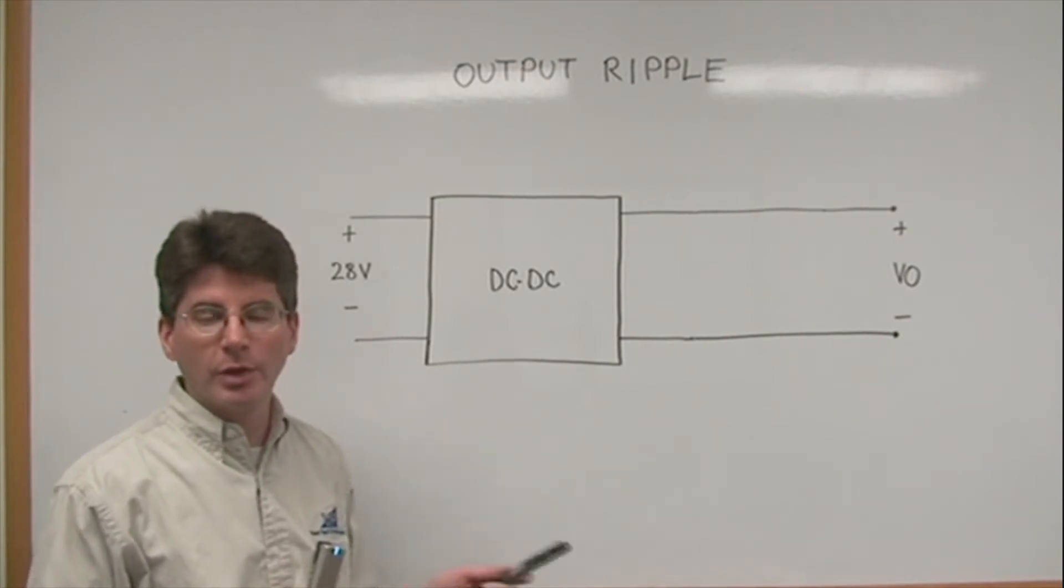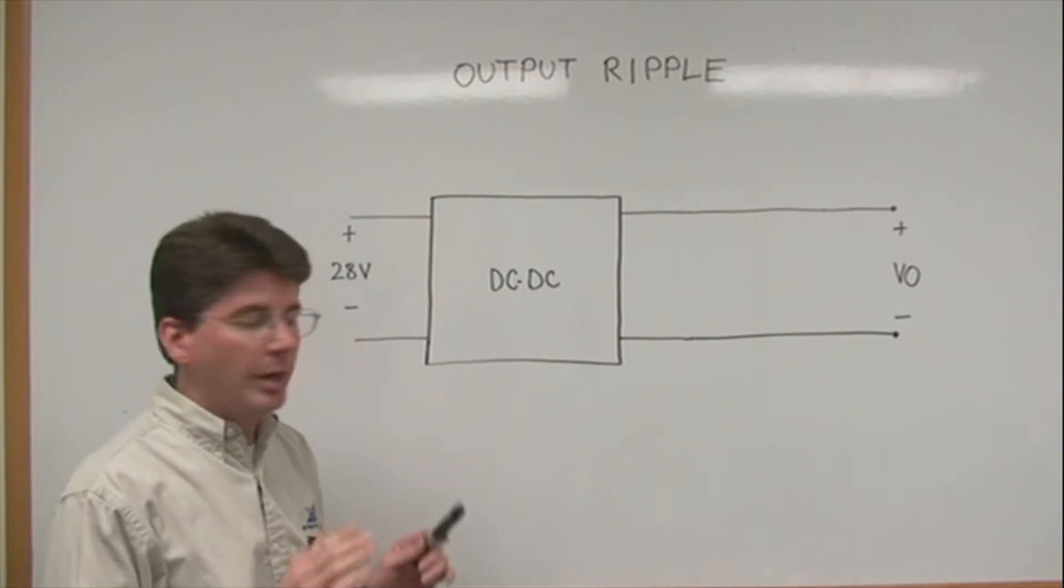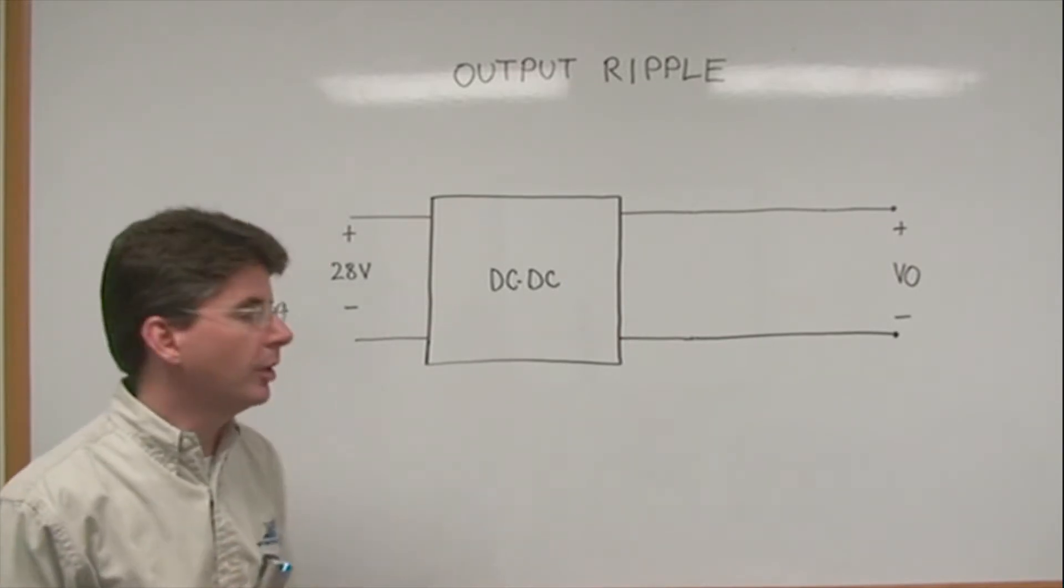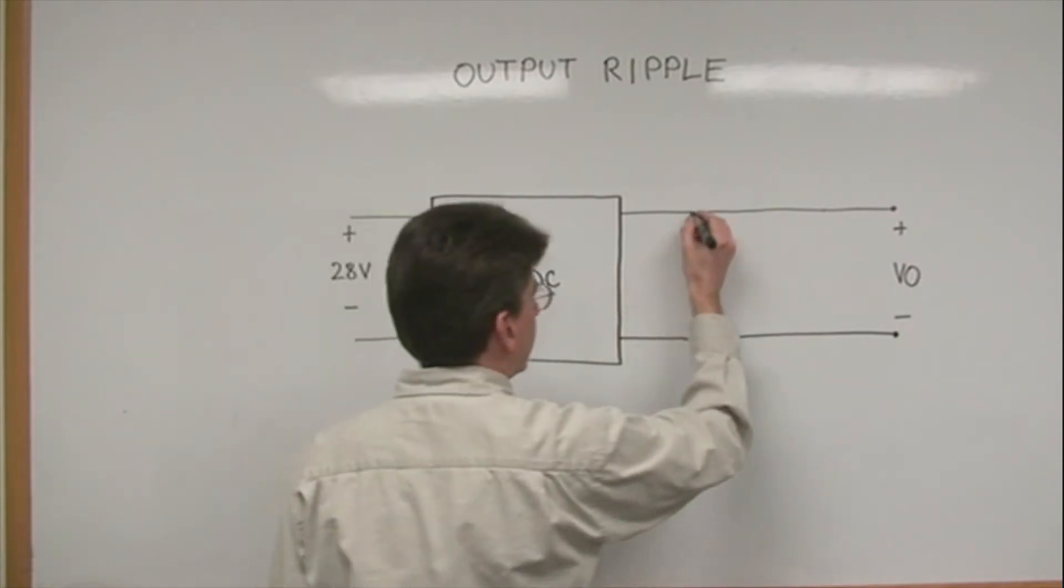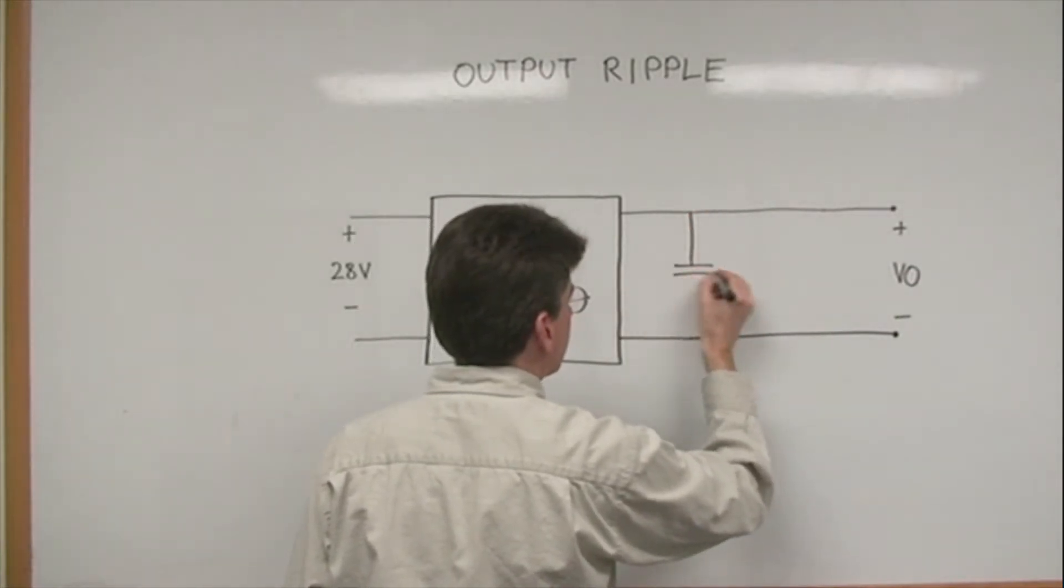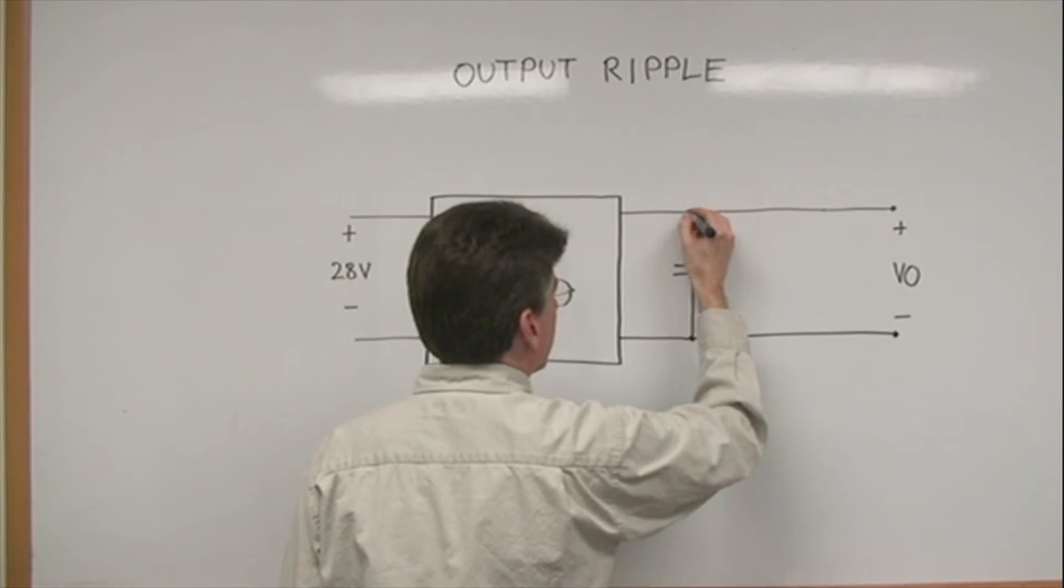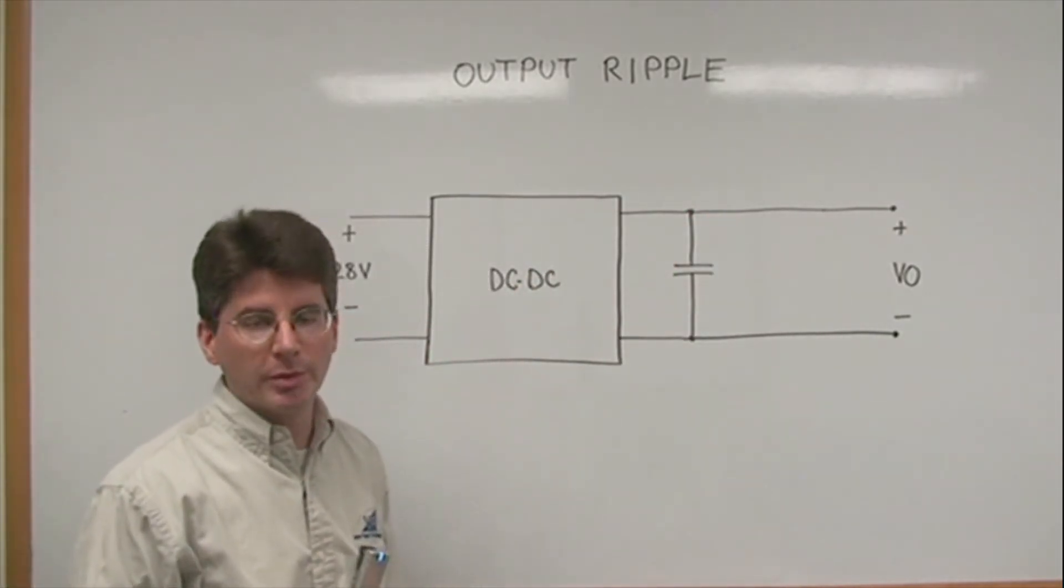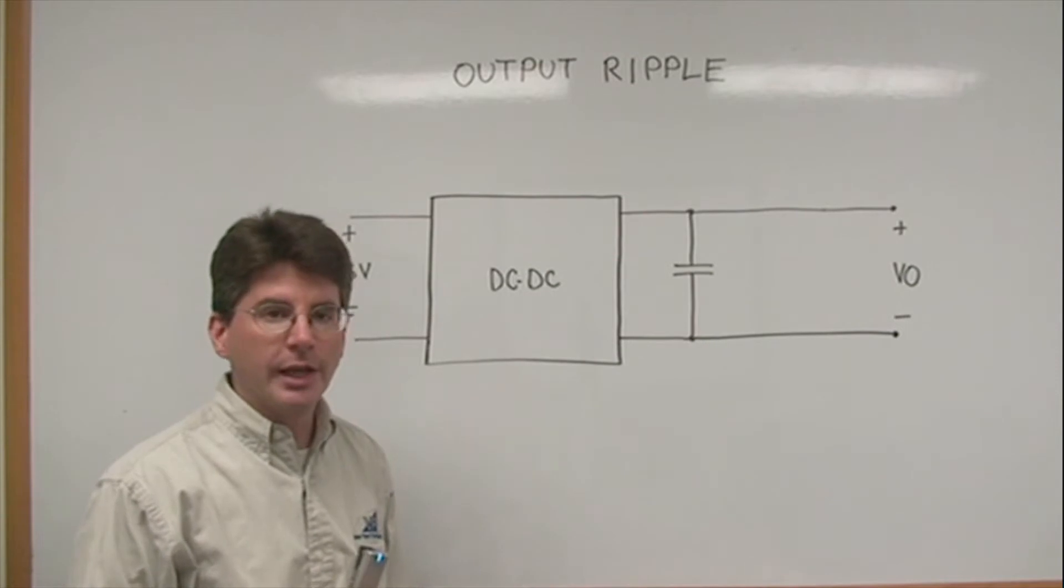The output ripple of the DC-DC converter is fairly well filtered with the converter standalone. It may be in the range of 20 to 50 millivolts peak-to-peak. For applications which require much lower output ripple, the first thing we always recommend is adding an output capacitor.